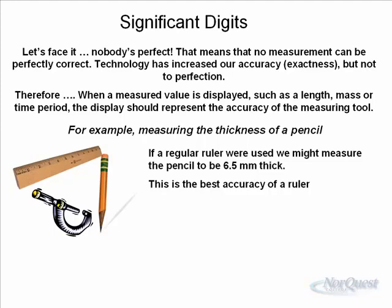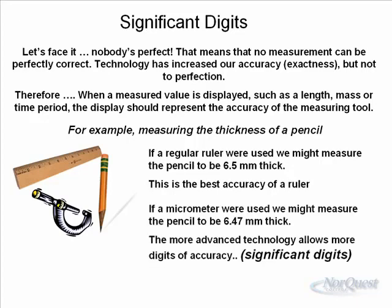However, if you use a micrometer, which is in the picture there, you can see sometimes we've got a micrometer. But a micrometer, we might measure the width of the pencil to be 6.47. Now, notice the 6.47 is about the same number, but notice it's accurate to the nearest hundredth of a millimeter. Whereas the previous measurement was only accurate to the nearest tenth of a millimeter.